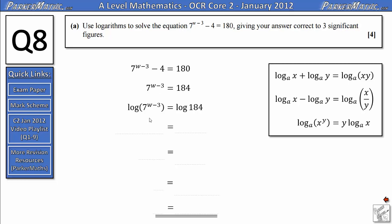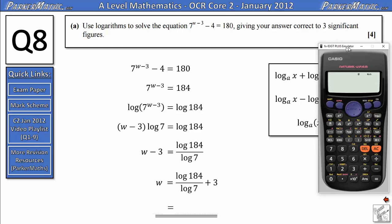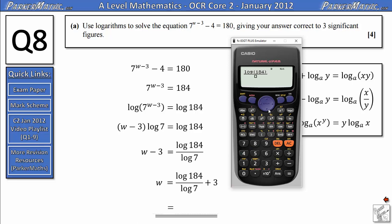So next I'm going to use one of the log laws to rewrite the left hand side. Looking at the power law, it says log(x^y) = y·log(x). So we're going to bring this power down, so we'll get (w-3)·log(7). It's really important that this w-3 is in a bracket because we're multiplying the whole thing by w-3. Next we'll divide both sides by log(7), equals log(184)/log(7). Finally I'll add 3 to both sides to get w = log(184)/log(7) + 3. I can now put this into my calculator, and I get 5.68 to 3 significant figures.